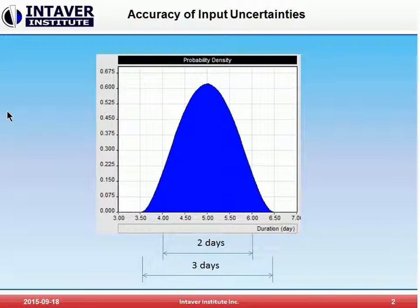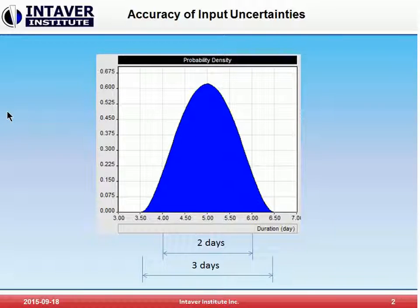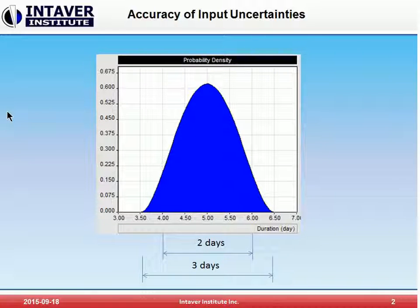Let's assume a case where you are estimating low and high durations for a software development task. Even if you have performed this task several times, it is still impossible to estimate accurately whether the duration is between 4 and 6 days, or between 3.5 and 6.5 days. In this case, the imprecision — the variance between the actual low and high estimates and your estimate — is greater than 10%.